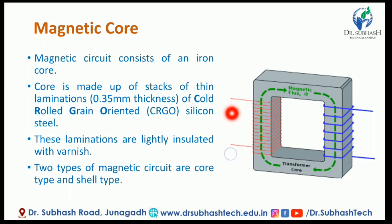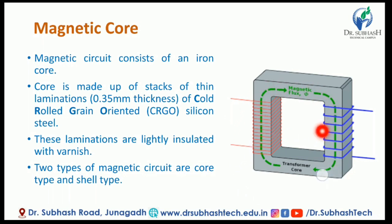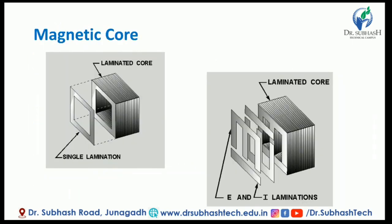The number of primary turns is N1. The voltage is available, and the magnetic flux is generated. The secondary winding induces a voltage by the electromagnetic induction principle.